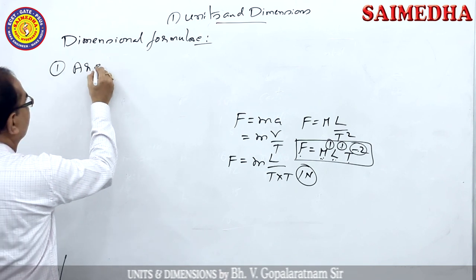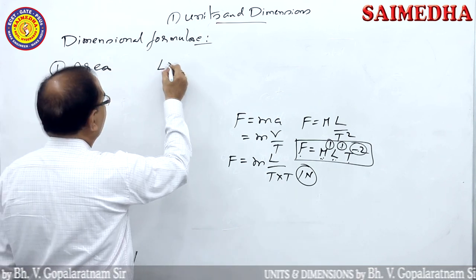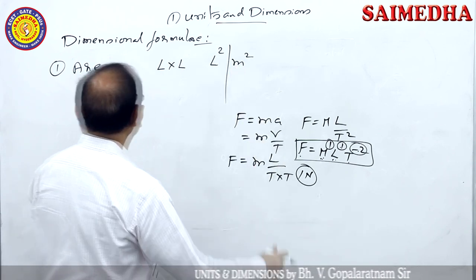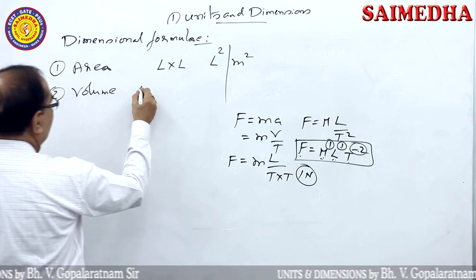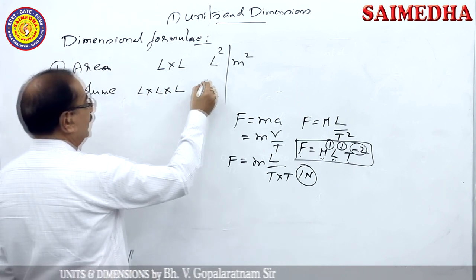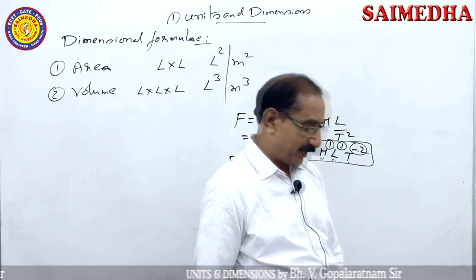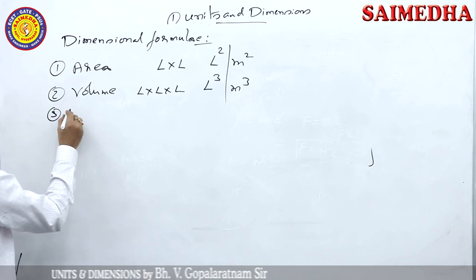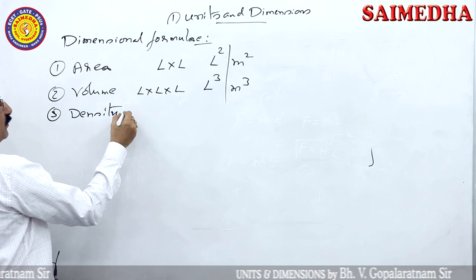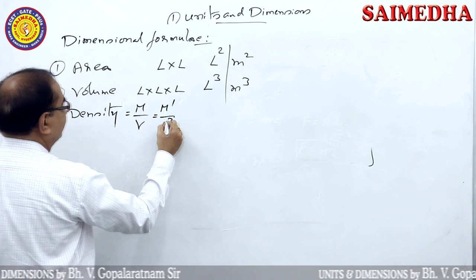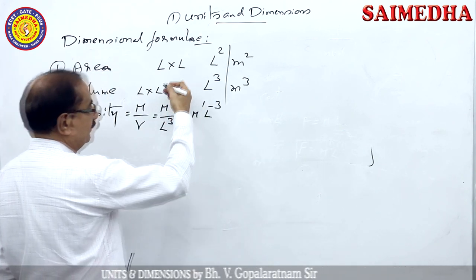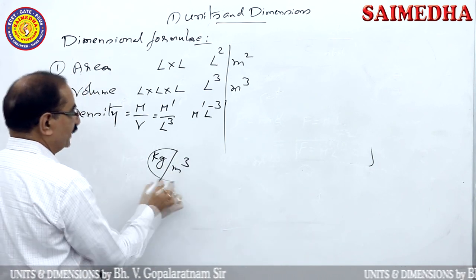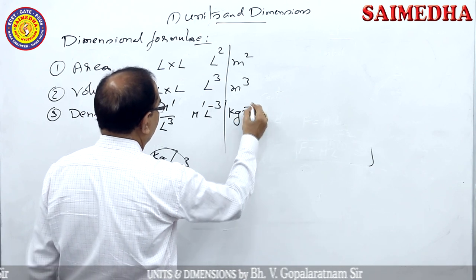Let us now see dimensional formulas for important physical quantities. Area = length × breadth = L², units: m². Volume = length × breadth × height = L³, units: m³. Density = mass / volume = M¹L⁻³, units: kg/m³.